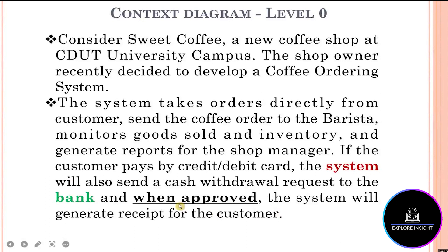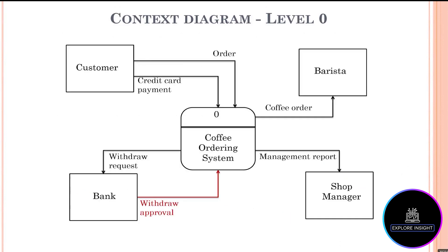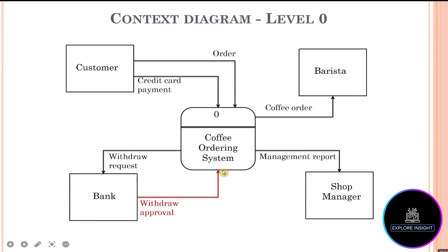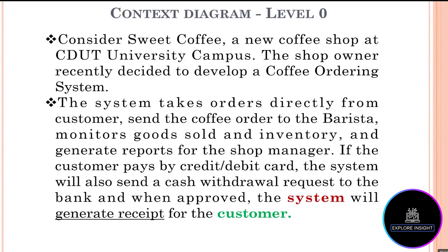It says 'when approved' — sometimes a transaction can be rejected or accepted. In this case, when the bank approves, who approves? The bank. To whom? The system. So we draw an approval flow from the bank to the coffee ordering system. The data flow information is labeled 'approval,' going from the bank back to the system.